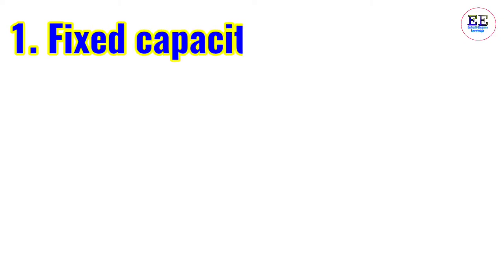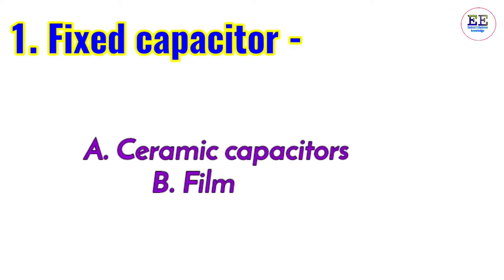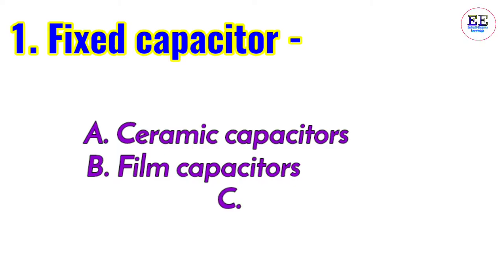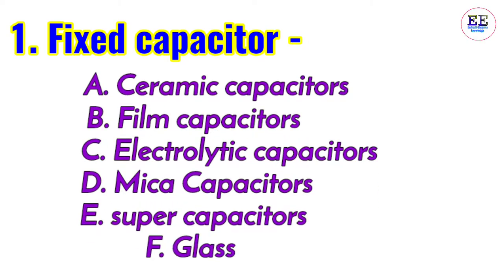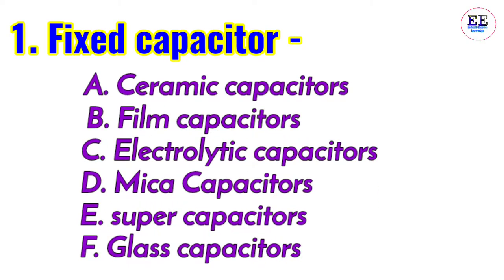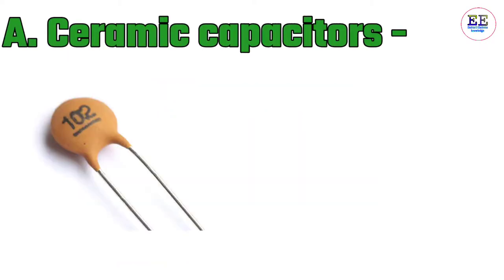The important types of fixed capacitors are: A) ceramic capacitors, B) film capacitors, C) electrolytic capacitors, D) mica capacitors, E) supercapacitors, and F) glass capacitors. Now let's explain all the fixed capacitors. A) Ceramic capacitors: ceramic capacitors come in disc form.